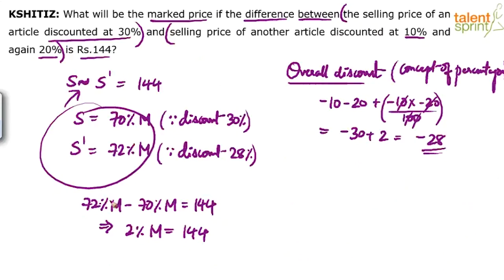If 2% is 144, 100% is how much? Basic calculation. 2% is 144, 100% is how much? So if 2% is 144, 1% will be 72, half of it. 2% is 144, 1% is 72. If 1% is 72, 100% will be 7,200. So that's your answer. The mark price will be 7,200.